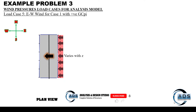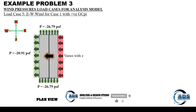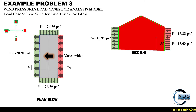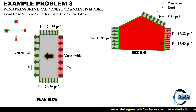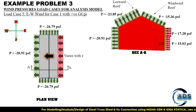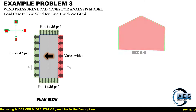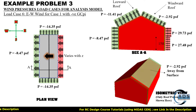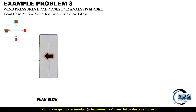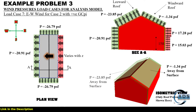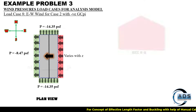For load case 5, this becomes the windward wall, that is the leeward wall, and the side walls remain the same. When we cut section AA, the windward wall pressure and leeward wall pressure are shown. The right portion of the roof has now become the windward roof and the left portion has become the leeward roof, both carrying negative pressures, so in the isometric view both pressures are away from the surfaces. Similarly for load case 6 with negative GCpi, load case 7 case 2 positive GCpi, and load case 8 case 2 with negative GCpi.